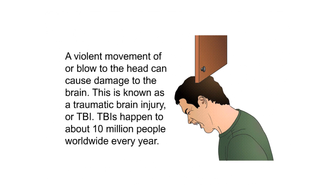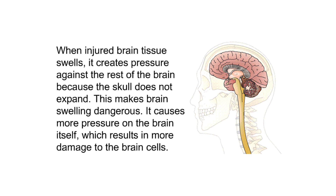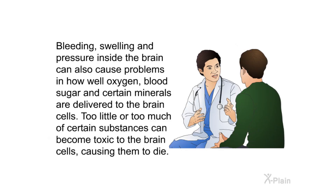Summary. A violent movement of or blow to the head can cause damage to the brain — this is known as a traumatic brain injury, or TBI. TBIs happen to about 10 million people worldwide every year. When injured brain tissue swells, it creates dangerous pressure against the rest of the brain, causing more damage to brain cells. Bleeding, swelling, and pressure inside the brain can also impair delivery of oxygen, blood sugar, and certain minerals to brain cells. Too little or too much of certain substances can become toxic to brain cells, causing them to die.